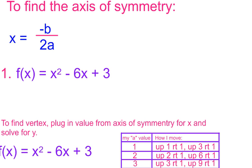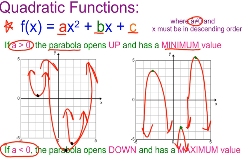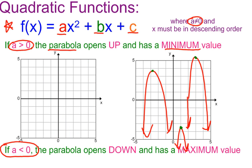When you see our first problem, you'll notice it asks for the axis of symmetry. The axis of symmetry is the line that cuts the parabola in half. If I sketch a parabola, the axis of symmetry is the line that divides it right down the middle.